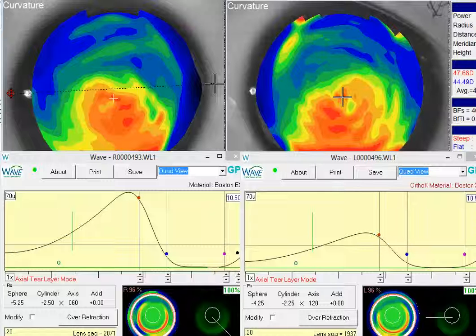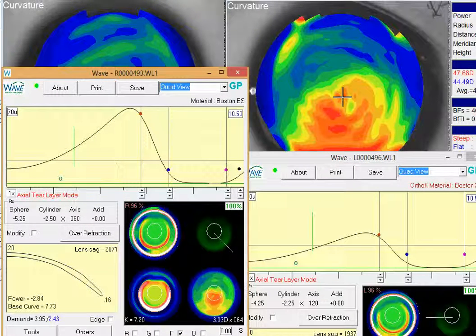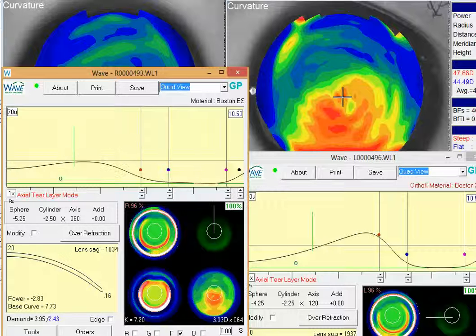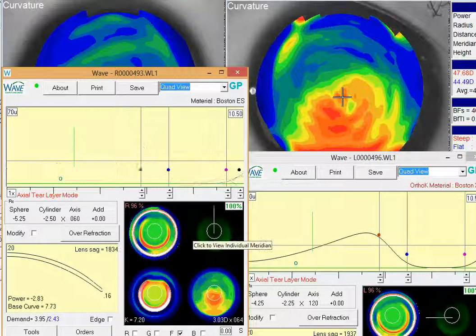If we look at the designs for a moment, the first thing I notice is these lenses are kind of a reverse geometry design, as you probably know. In fact, if you fit many ortho-K lenses, this looks pretty much like an ortho-K design on this cornea, which sounds like it's worked pretty well so far at this point.